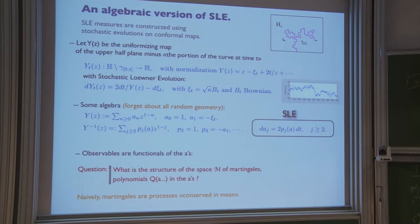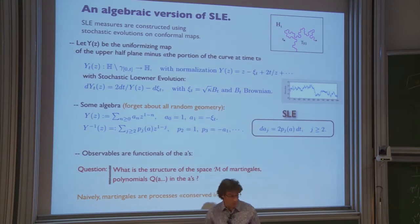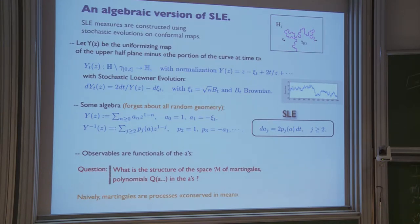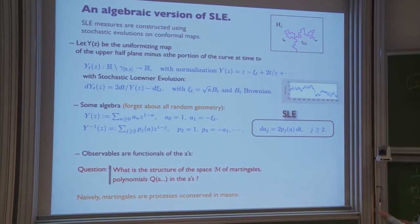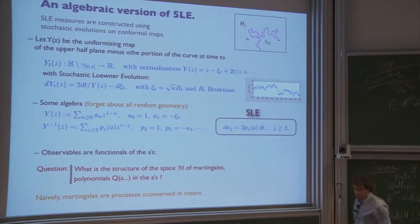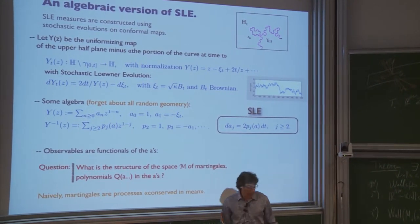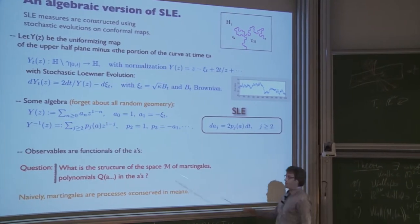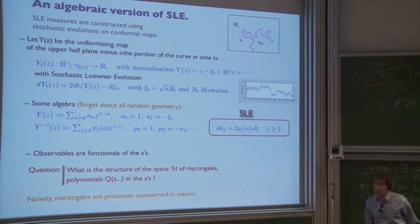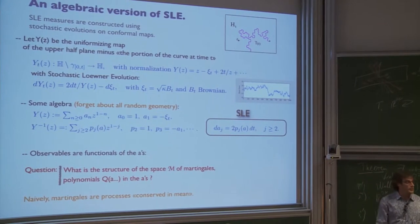Everything is coded into these coefficients. So if you want to know the geometrical property of the curve, you look for functions of the a_i which encode that property. All the observables in SLE linked to the curve are coded into functions of the a_j. What I want to play with today is the question: what is the structure of the space of martingales which are polynomial in these coefficients?